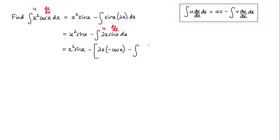That's minus the integral of the v term which is negative cos x, and du by dx this time will be 2, and that's with respect to x.